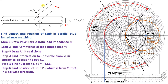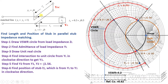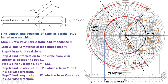For the length of the stub L2, we move from YSC to Y2 in the clockwise (towards the generator) direction. YSC is at Vmax and Y2 is at -j1.56. Moving from YSC to Y2 clockwise gives the stub length. This length L2 is 0.091 lambda. Note: a mistake was made and corrected — the value is 0.091 lambda.